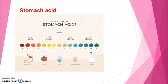Stomach acid: gastric acid is a watery, colorless fluid that is produced by your stomach lining. It is highly acidic and helps break down food for easier digestion. This helps your body absorb nutrients more easily as food moves through your digestive tract.